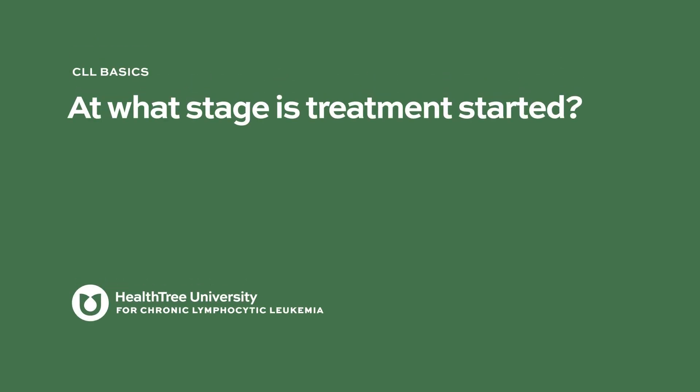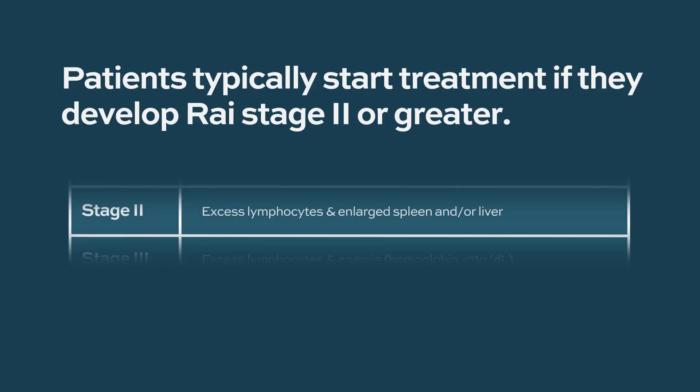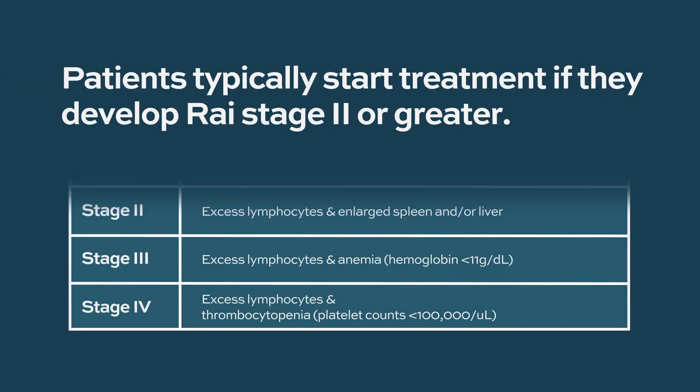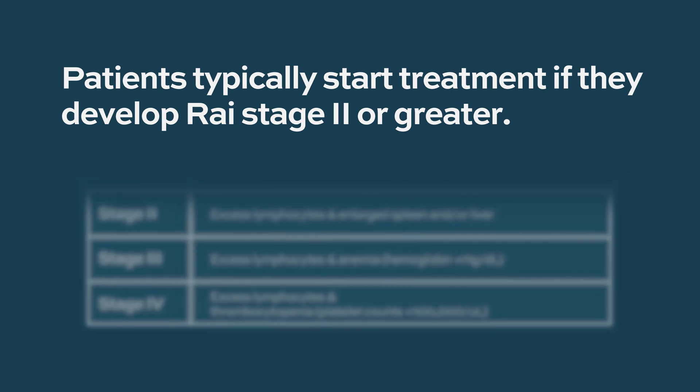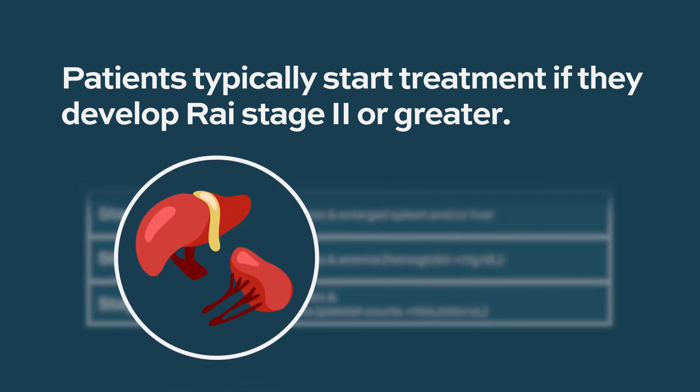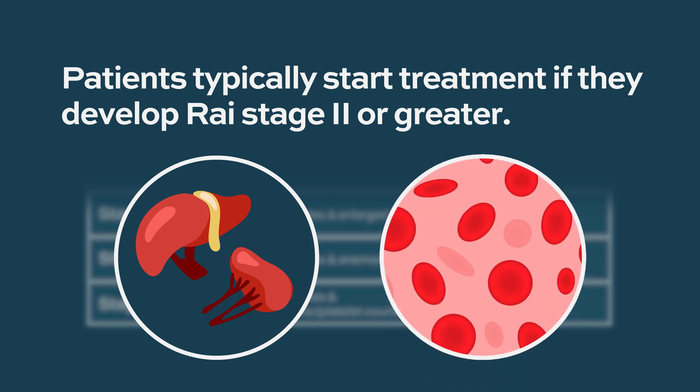At what stage is treatment started? For chronic lymphocytic leukemia, we generally often don't even need to treat patients, and observation alone may be possible for a period of time. The reason to treat would be if you start developing Rai stage 2 or greater disease — enlarged spleen, enlarged liver, or if your hemoglobin and platelet count declines.